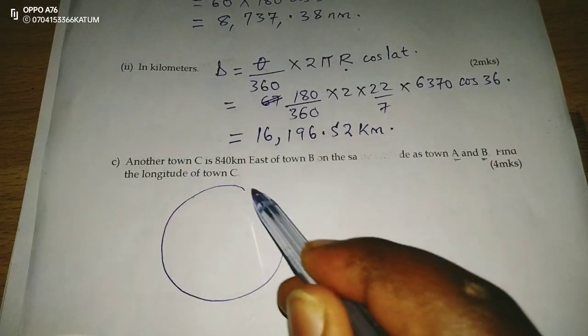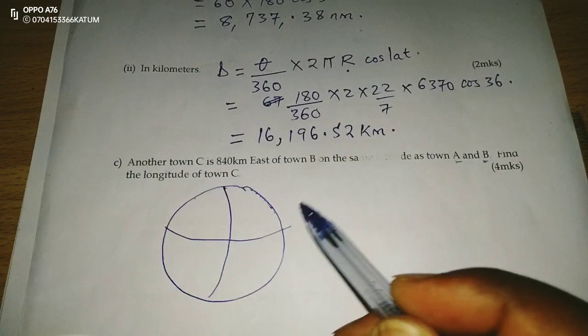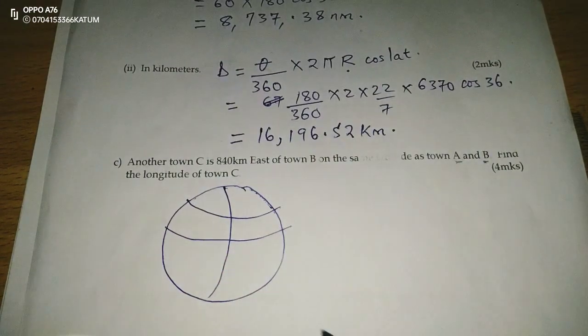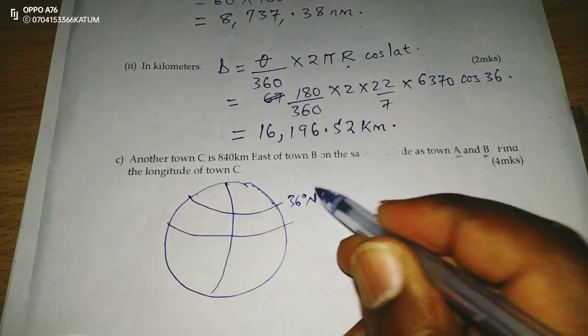We are being told that with this as prime meridian and equator, on the same latitude, that means latitude 36 degrees north,